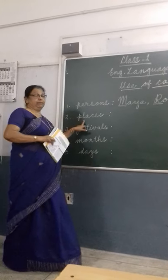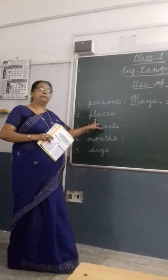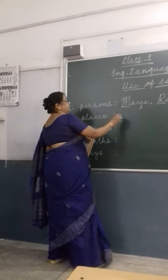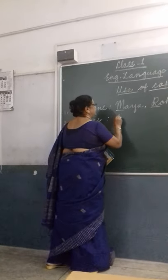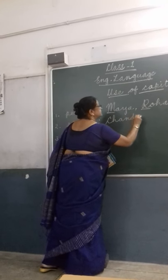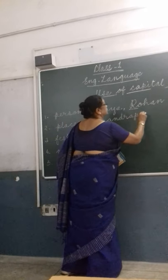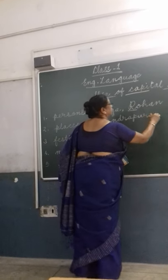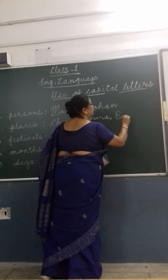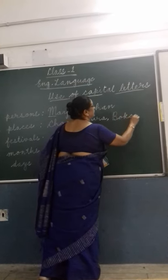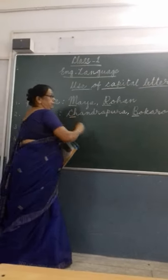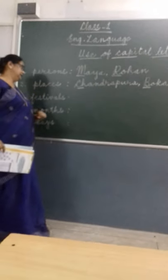Then, whenever we write a place name, we should write the first letter as a capital letter. For example, our place is Chandrapura. So when we write Chandrapura, the first letter C should be in capital. Then our district is Bukharu, so when we write Bukharu the first letter should be capital. Like this, whenever we write a place name, always use the first letter as capital.